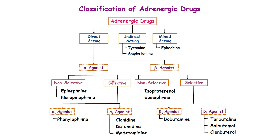Examples of non-selective alpha agonists include epinephrine and norepinephrine, the endogenous catecholamines. For alpha-1 selective agonists, we have phenylephrine. For alpha-2 selective agonists, we have xylazine, which is one of the most common, as well as clonidine, tomedetomidine, and medetomidine.